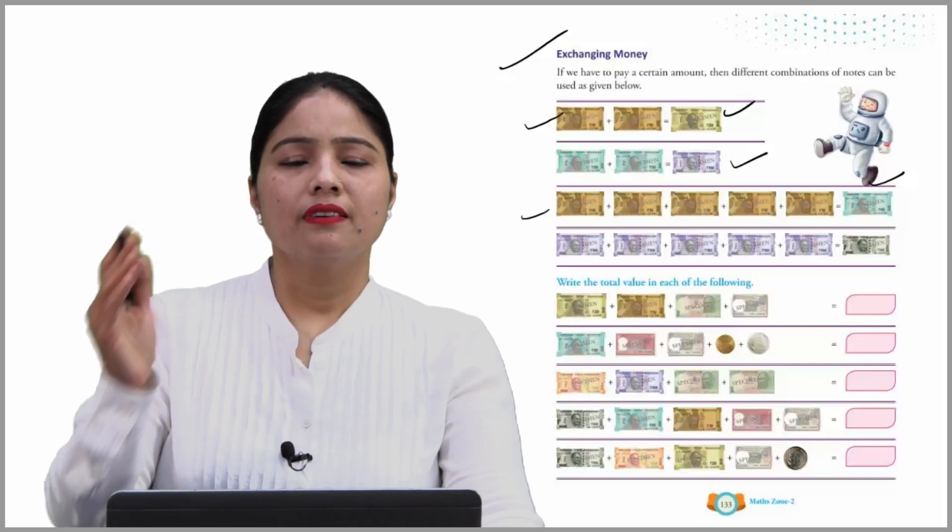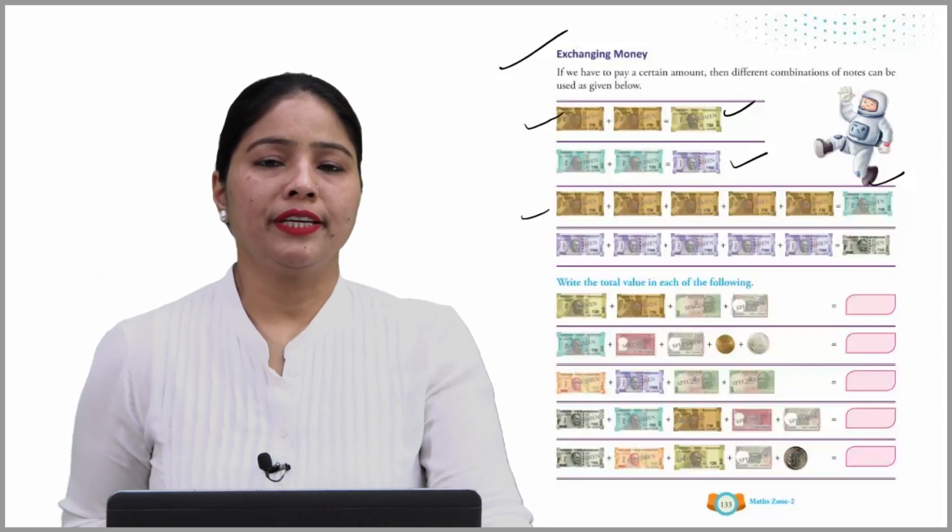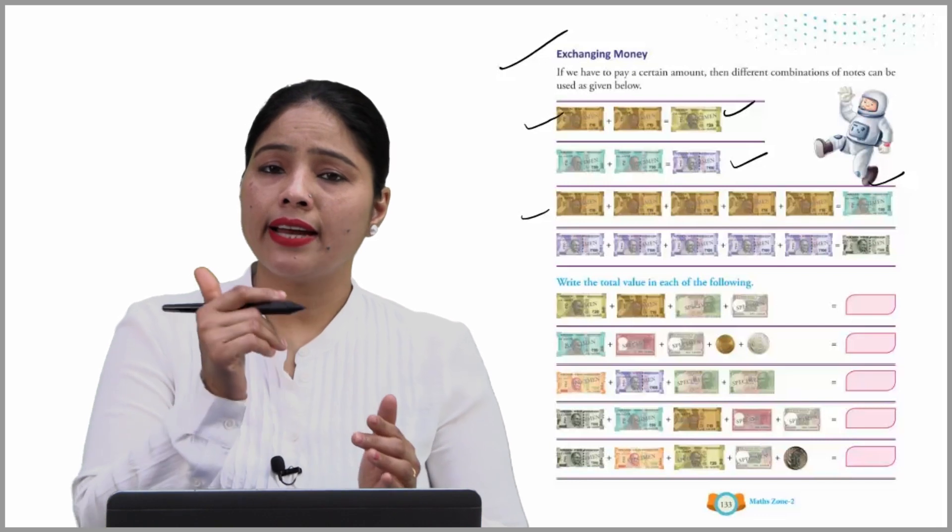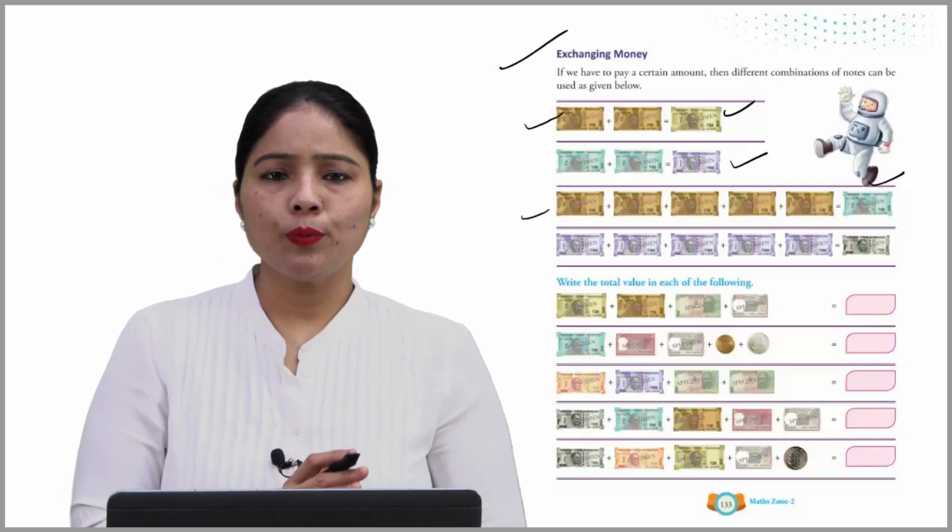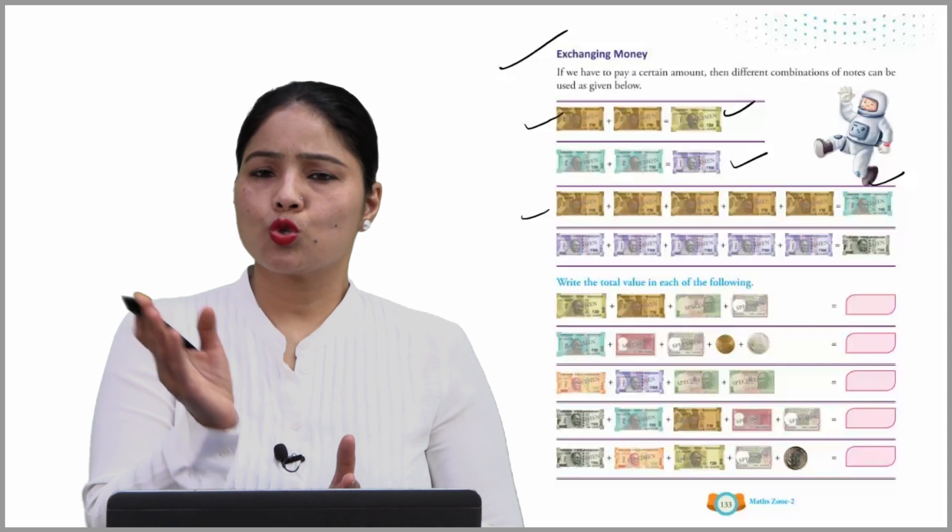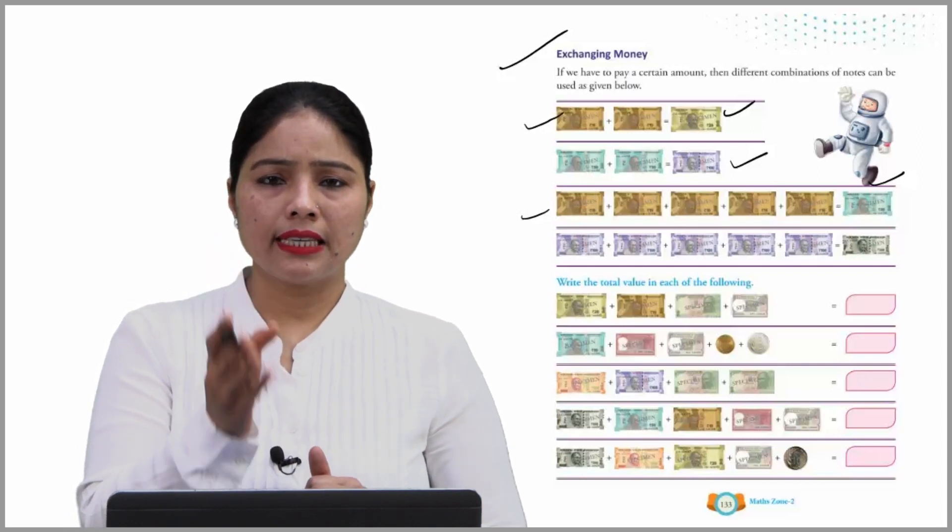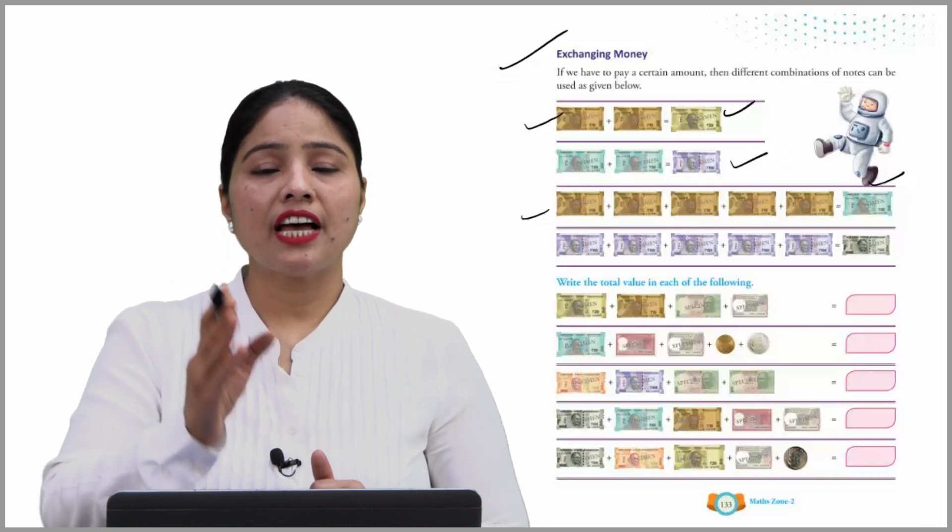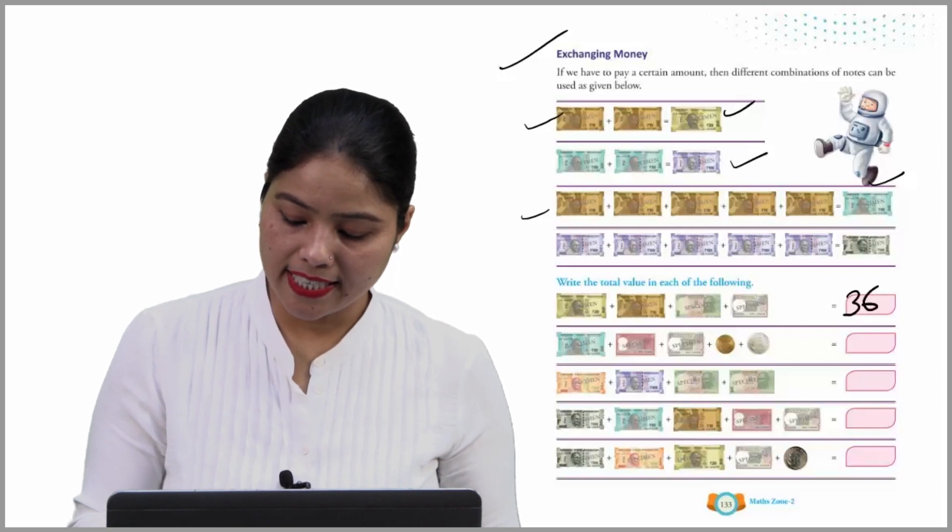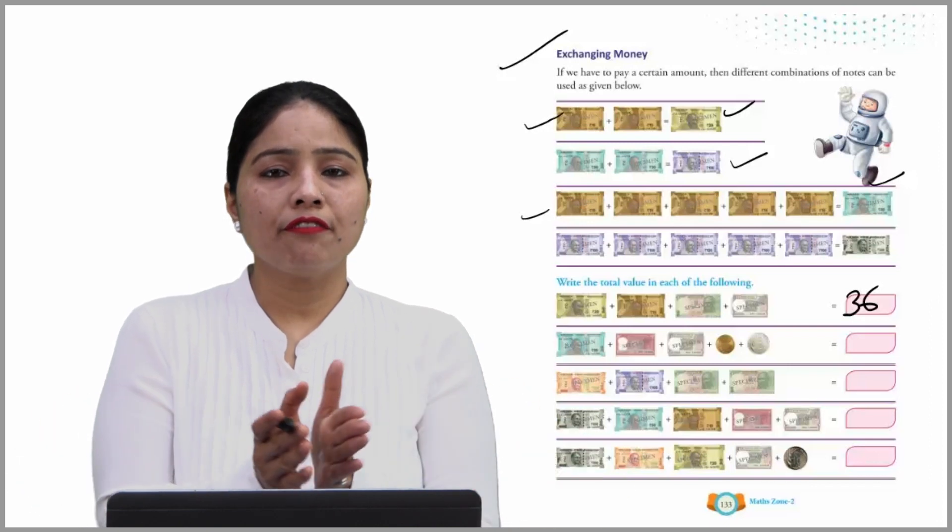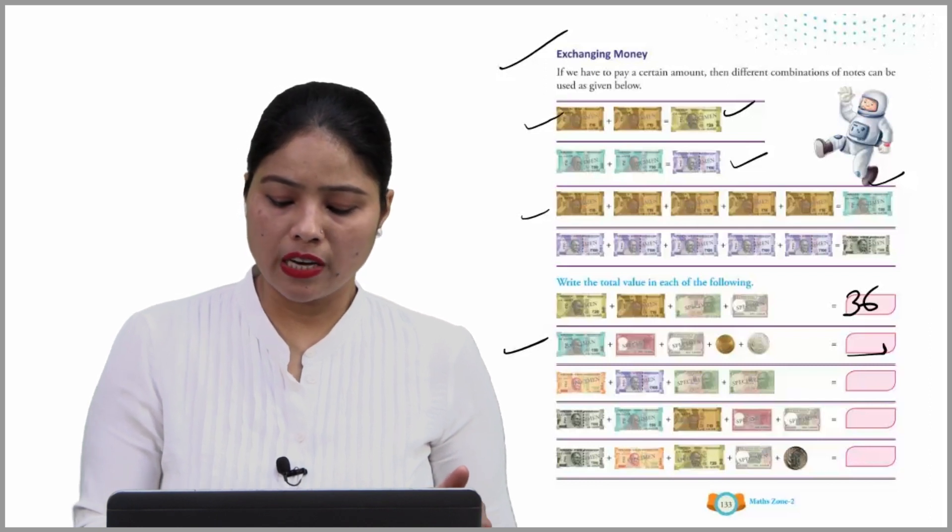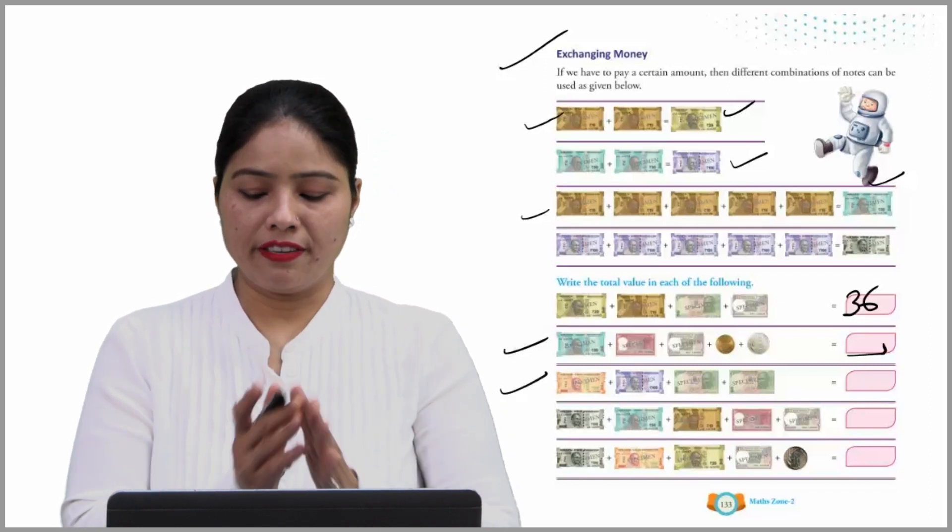Write the total value in each of the following. In this box there are rupees. You have to count all together and write their correct value. Let's start. This is 20 rupees note, this is 10 rupees note, this is 5, and this is 1 rupee note. Just add it: 20, then 30, then 35, and 35 plus 1 is 36. Write the correct value, 36.